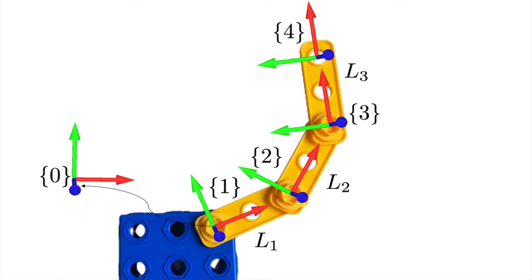Frame 0 is the fixed frame with the origin located at the base joint. Frame 4 is the end effector frame attached to the tip of the third link. We don't need all the frames to derive the forward kinematics using the product of exponentials formula, but we depicted them for educational purposes. Since the motion is on the plane, the z-axes are parallel and out of the page. To reiterate, we don't need all the coordinate frames.